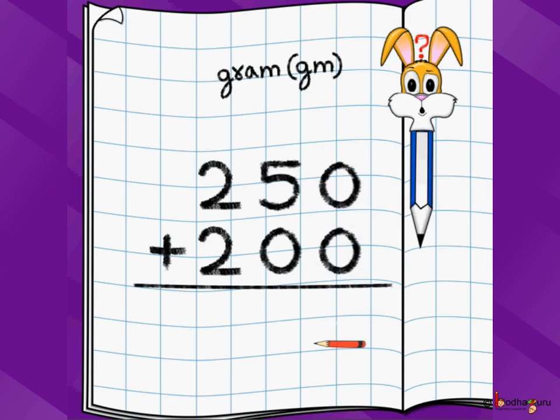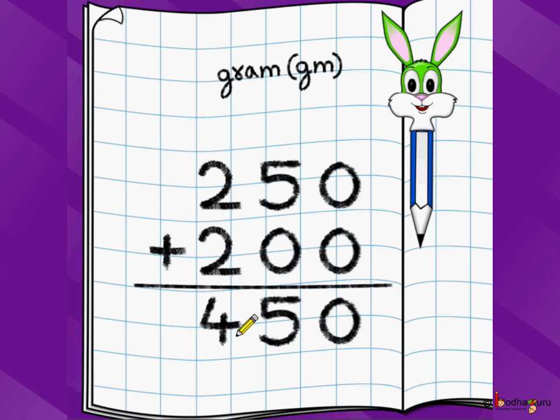Let's take another problem this time with grams. Let's say we have 250 grams of salt and we got 200 grams of salt more. 250 grams we had previously and we got 200 grams of salt more. We write exactly like three-digit addition: 100th place below 100th place, 10th place below 10th, 1's place below 1's. Then we start adding from 1's position going towards 10th, then 100th. 0 plus 0 is 0, 5 plus 0 is 5, 2 plus 2 is 4. We have 450 grams of salt with us.